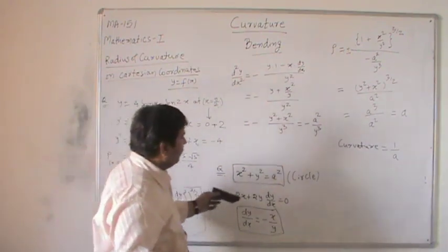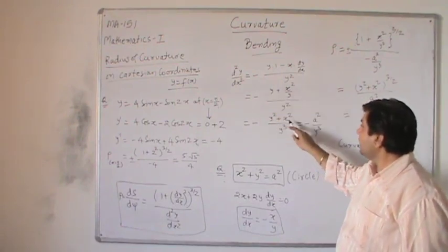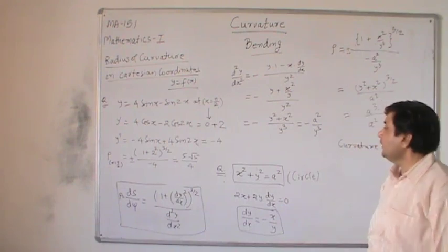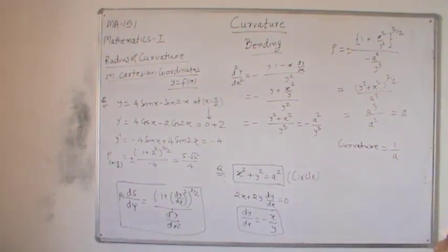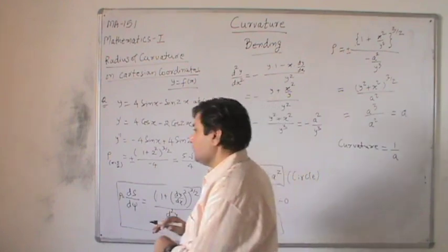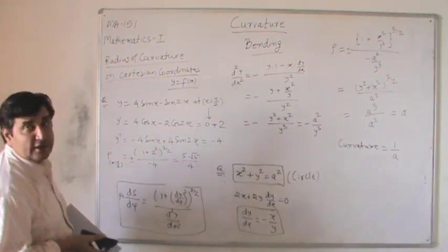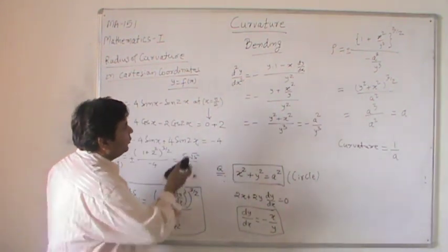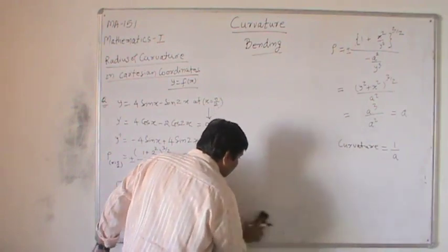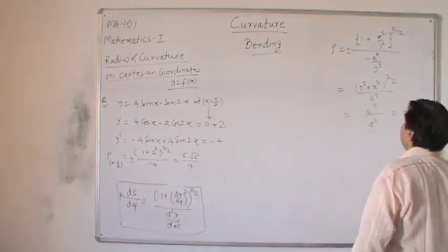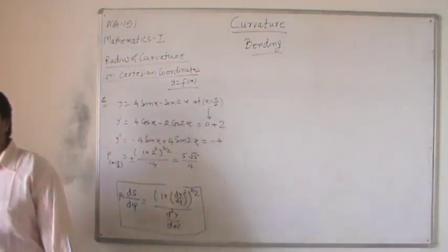Similarly we can calculate the radius of curvature of other curves. As you found, while calculating the second derivative in many problems, we can use the given equation of the curve to simplify the value of the second derivative and thus simplify the radius of curvature also. This is an important point to note while solving problems on Cartesian curves.